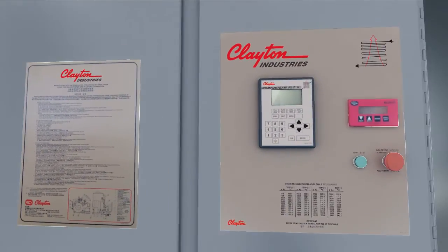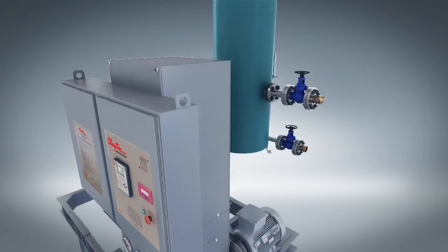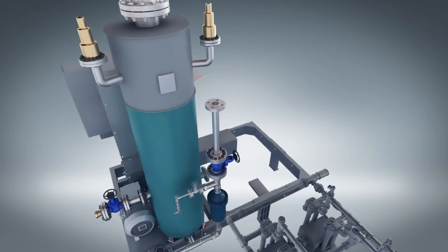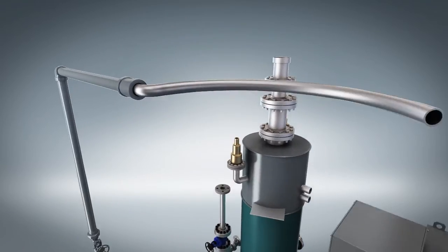Steam generators are built as packaged systems, ranging from 25 to 2,000 boiler horsepower, pressures up to 3,000 psi, and for a wide range of gaseous and liquid fuels.